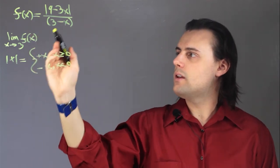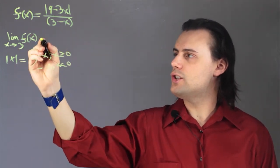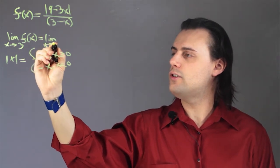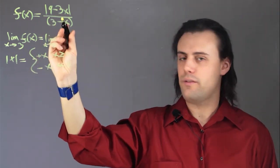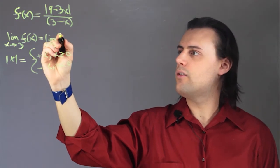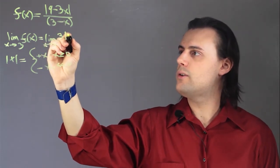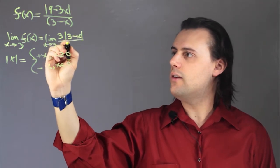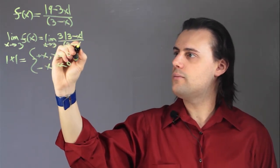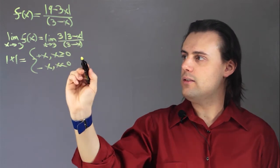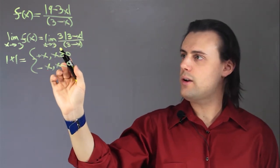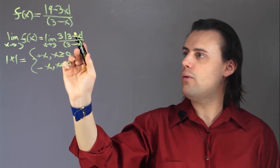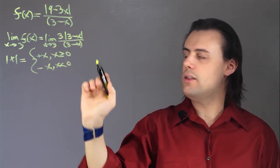So if we want to take the limit of this function, we have the limit as x approaches 3. Here I'm going to factor out a 3 from the numerator, so I have 3 times the absolute value of 3 minus x divided by 3 minus x. I can't divide these two, because as I approach 3, I'm going to have either a positive or a negative in the numerator.